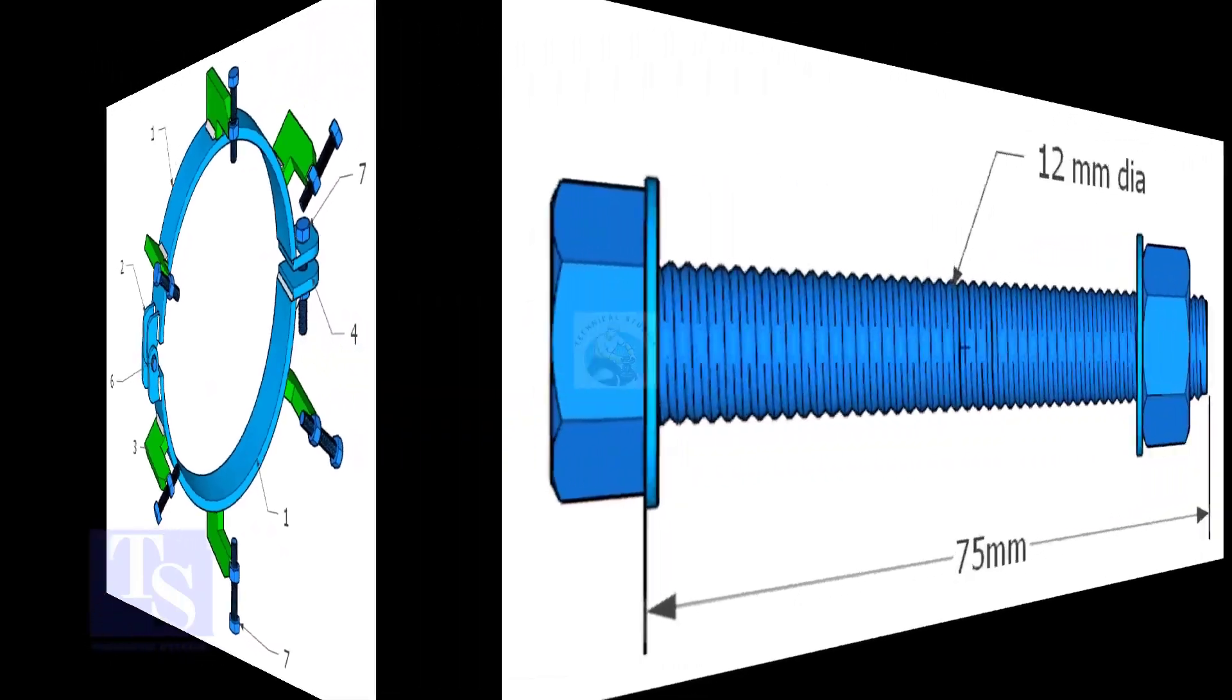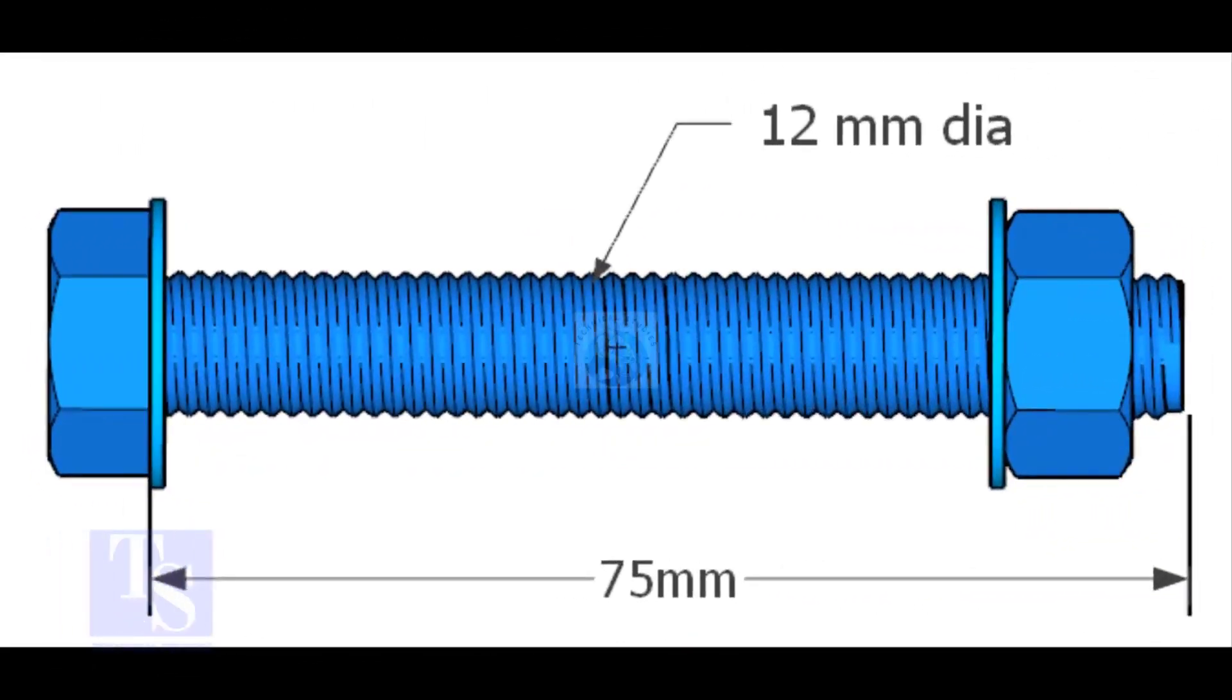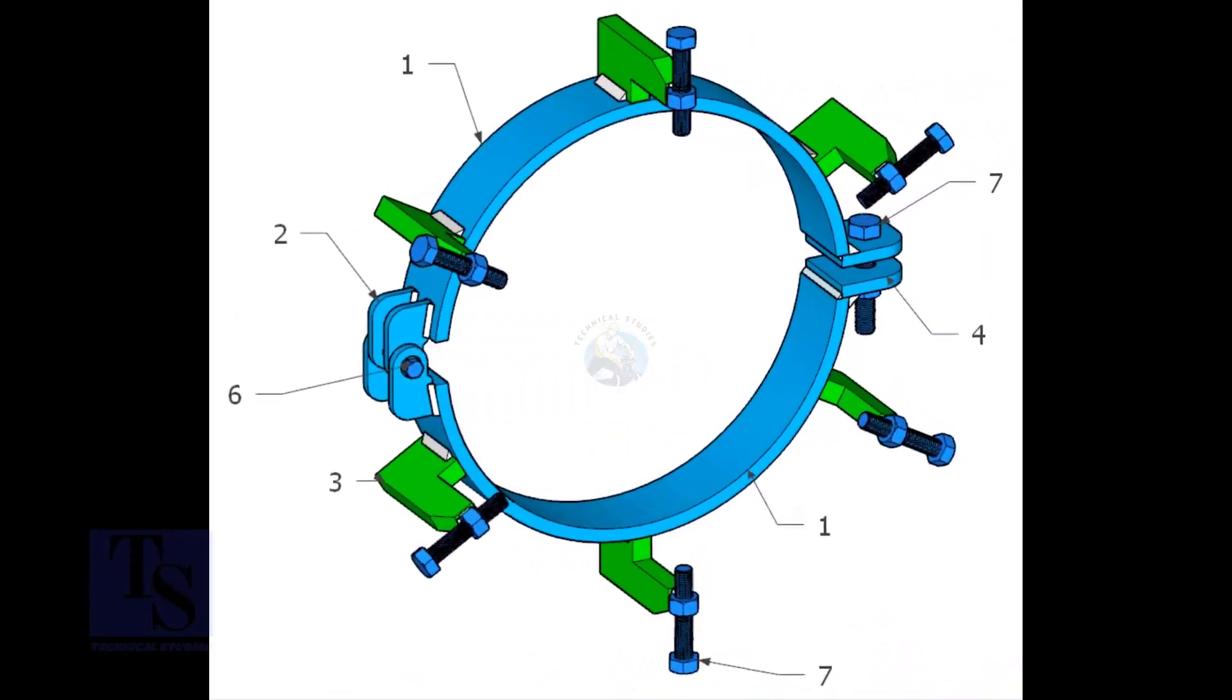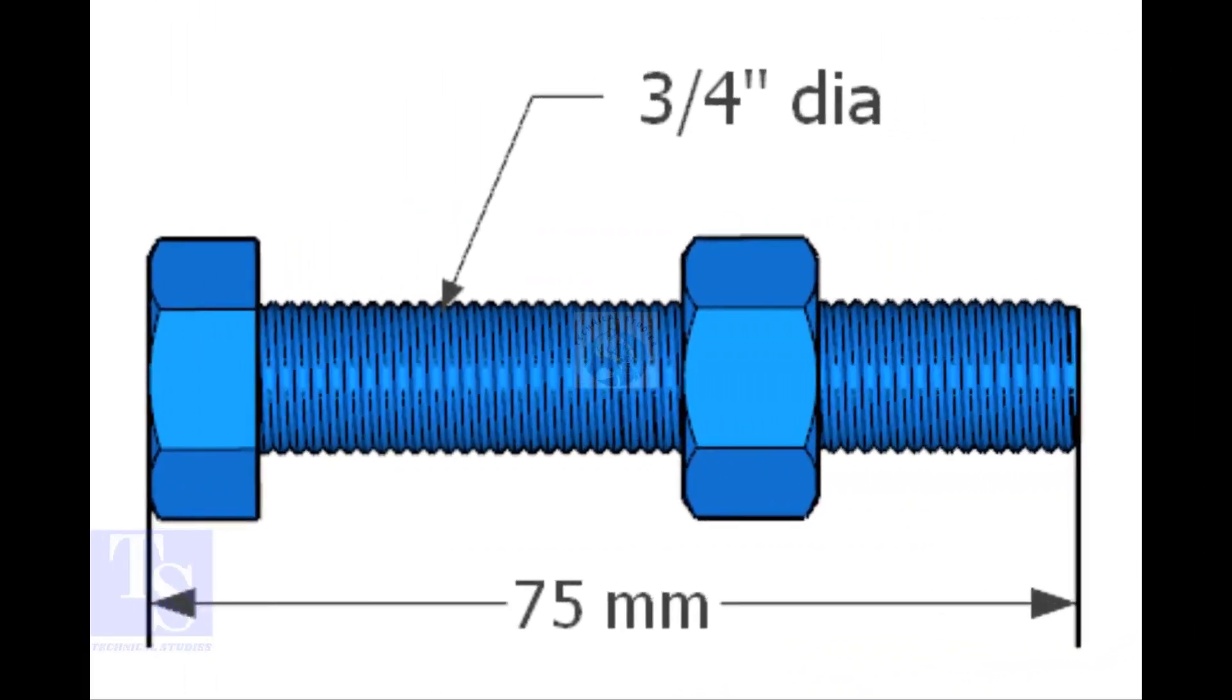Item number six is nut and bolt with two washers, half-inch diameter, and three inches long. The quantity is one number. Item number seven is nut and bolt, three-quarters diameter, and three inches long. The quantity is seven number.